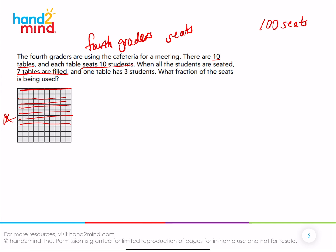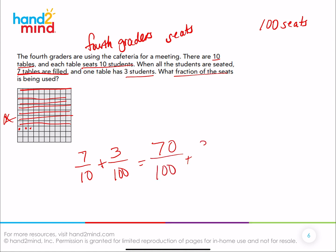The next table only has three students. If I want to know what fraction of the seats are being used: seven of the ten tables are being used, so seven tenths of the tables, plus three seats out of a hundred. Seven tenths is the same thing as seventy hundredths — because those seven tables hold seventy seats — plus three hundredths. Seventy hundredths plus three hundredths is seventy-three hundredths. We can write that in fraction form or in decimal form. Nice job.